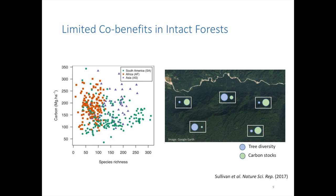Here's what we understand so far from intact forests. This graph shows species richness on the x-axis and carbon storage on the y-axis, and there appears to be virtually no relationship. Each point corresponds to a one-hectare forest plot where both species richness and carbon have been quantified. This tells us that co-benefits between carbon and tree diversity appear to be limited — prioritizing areas important for carbon would invariably miss areas that are important from a tree biodiversity point of view.